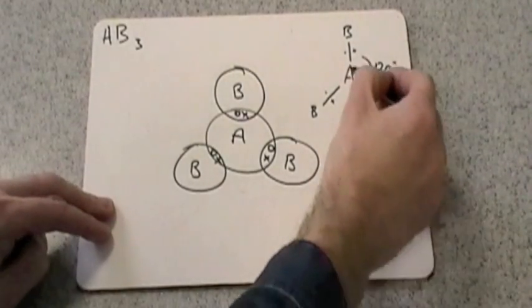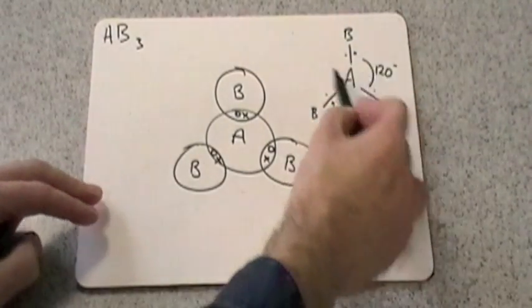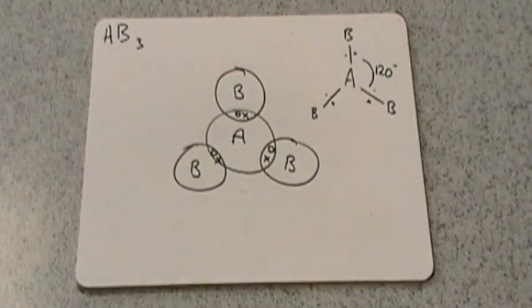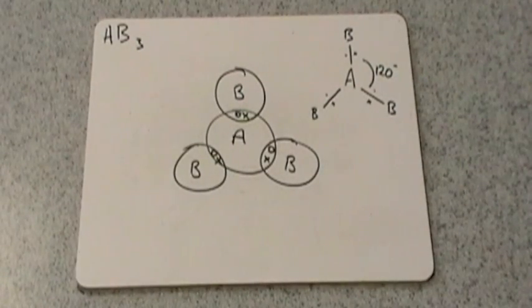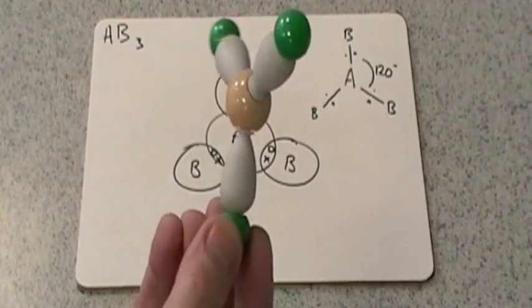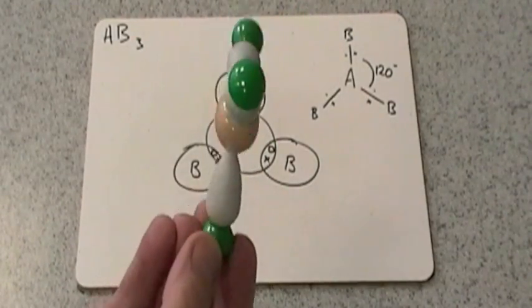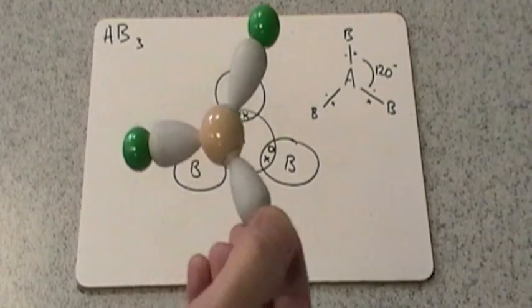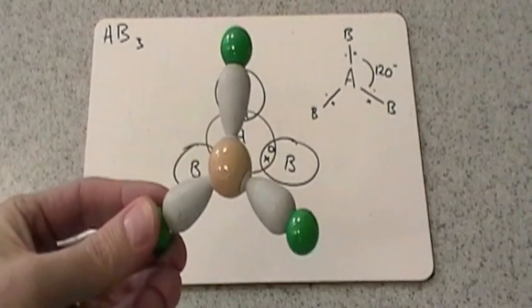All of these bonds are in the same plane. So they're all in the plane of the little whiteboard that I'm using. And what would that look like? I've got a model here. It would look like this now. So you can see everything's in the same plane.